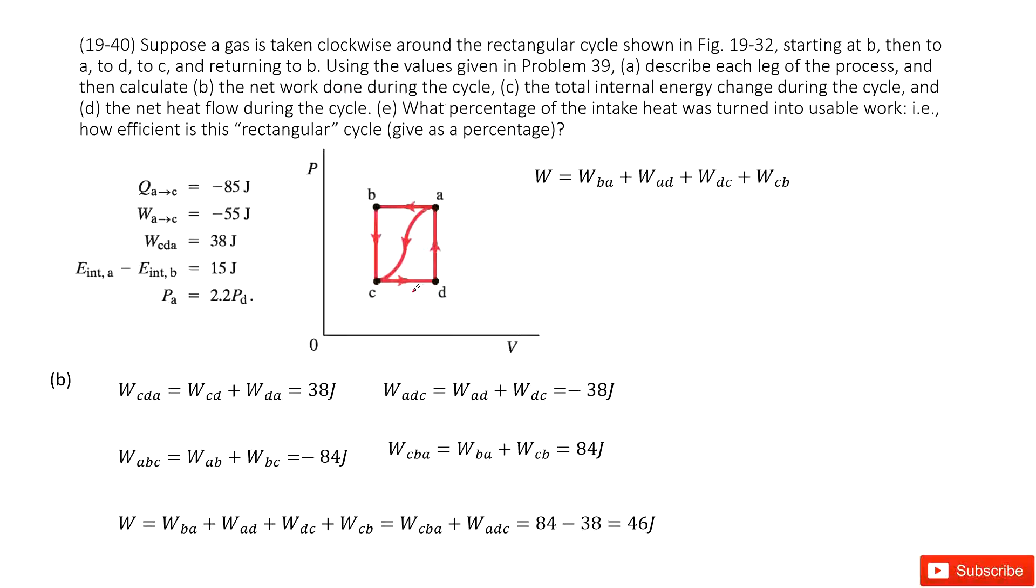The second part tells us we need to find the net work during the cycle. So the net work should be the work done BA plus work done AD plus work done DC plus work done CB. Now we can input the results from Problem 39. If you don't know how to do this calculation, you can check my previous videos.